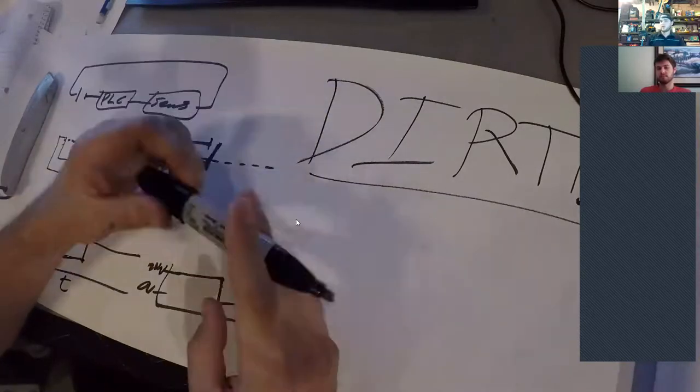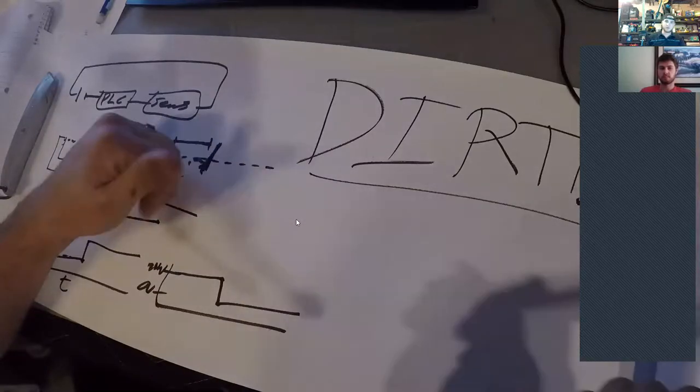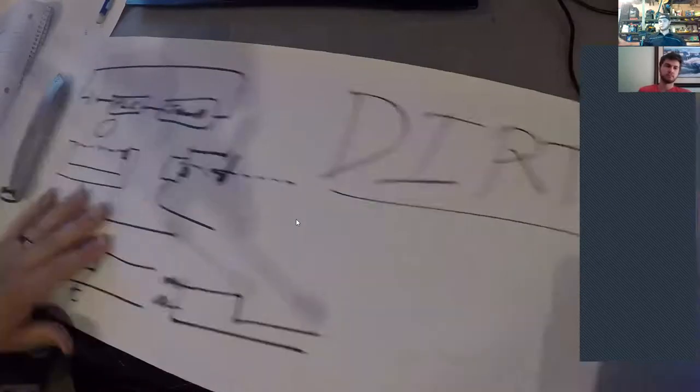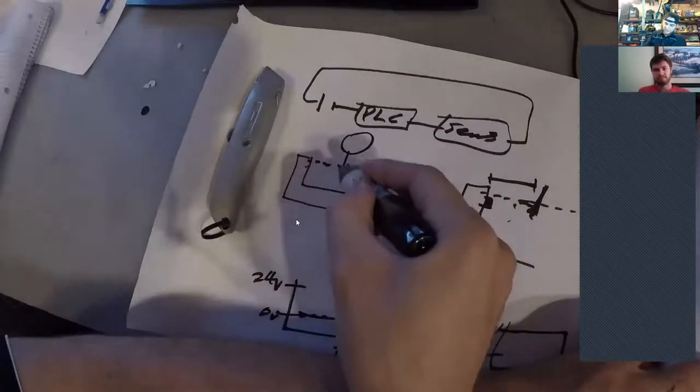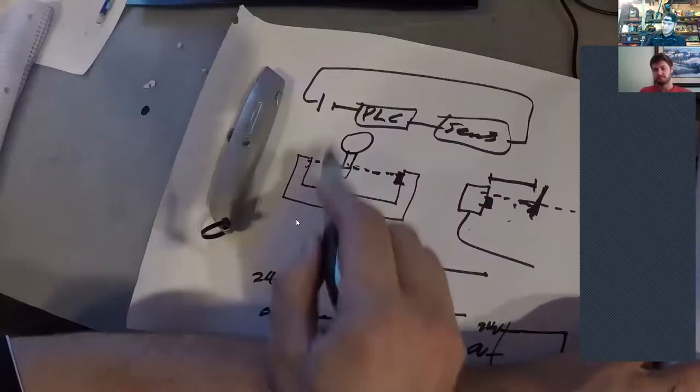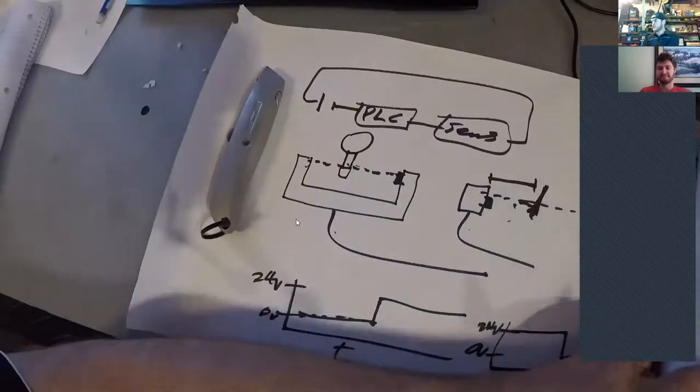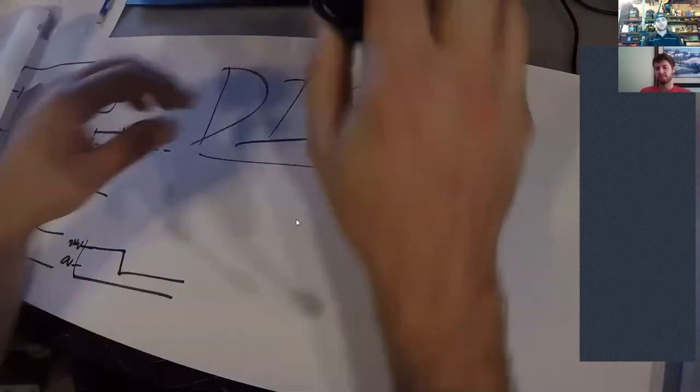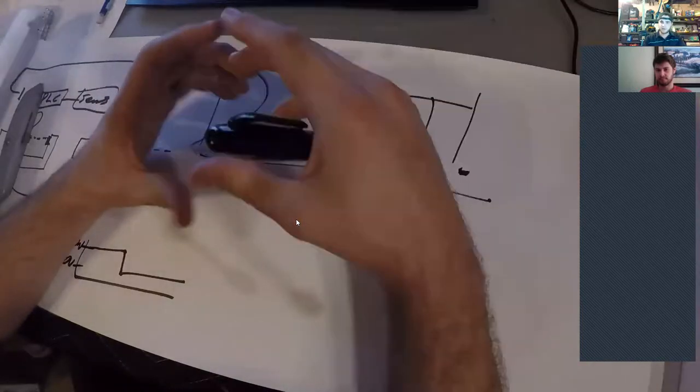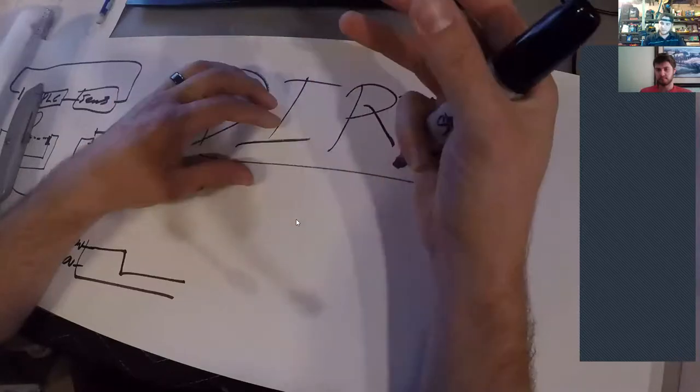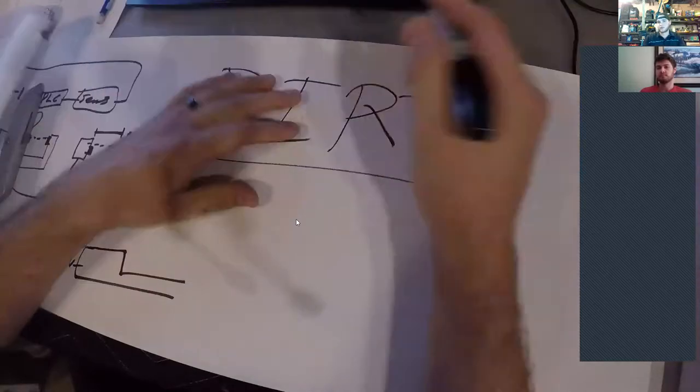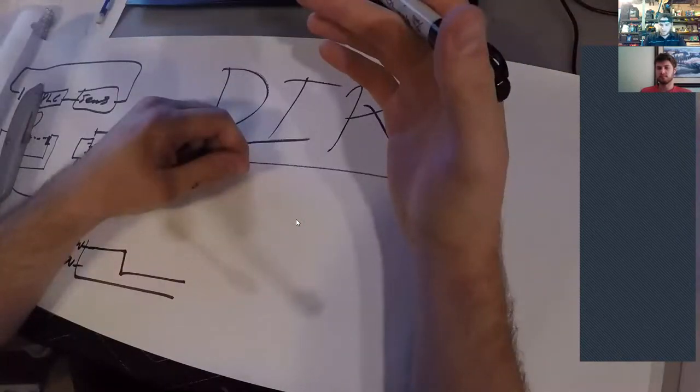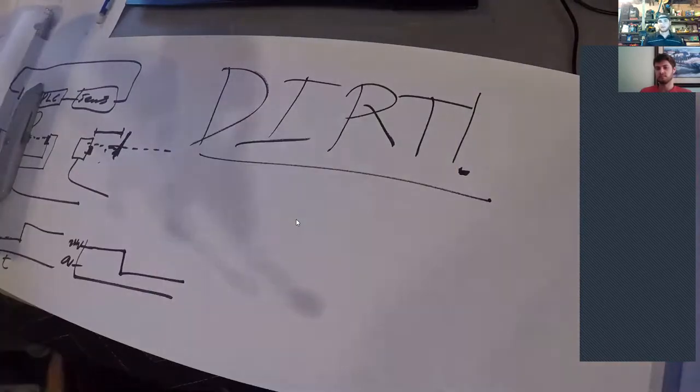Dirt and dust is a problem. So in an industrial setting, you can just get dirt or crud on your sensor and it'll block the light and it won't work correctly anymore. So we actually had that happen on a conveyor system where we were basically built our own encoder similar to what we did with that motor.